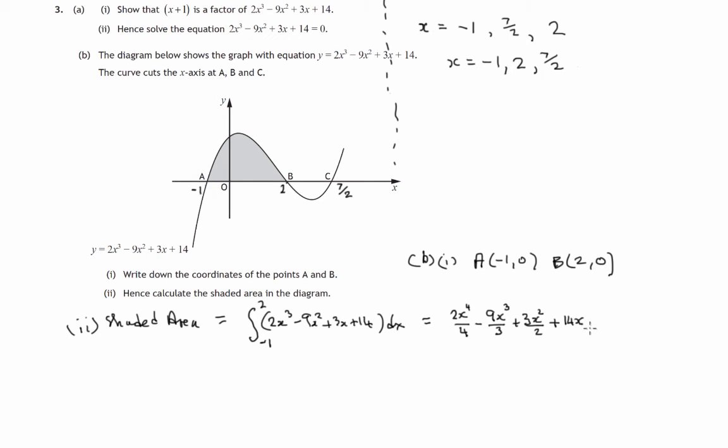Remember, if you're not sure of that one, you differentiate back. If you differentiate 14x, you get back to 14. So there's our integration. And it's between the values negative 1 and 2.